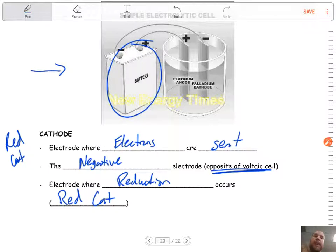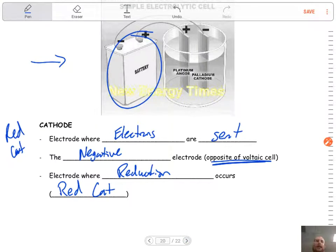So that means we get our red cat still holds true. The only issue now is that the charge of our electrodes has been flipped. The cathode now is negative, whereas then the anode is going to be positive.